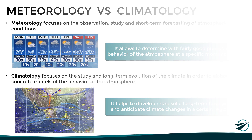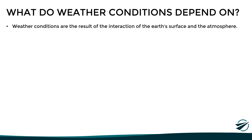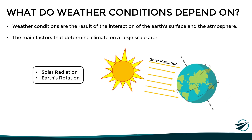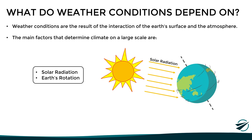After looking at all these concepts, you might be wondering: what do weather conditions actually depend on? Weather conditions are the result of the interaction of the Earth's surface and the atmosphere, affected by several factors. The main factors that determine climate on a large scale are the amount of solar radiation absorbed by the surface and the Earth's rotation. The Sun behaves as a kind of weather engine for the planet, since the Earth's surface is heated unevenly, generating pressure differences between areas, which in turn trigger all the weather phenomena that we know.